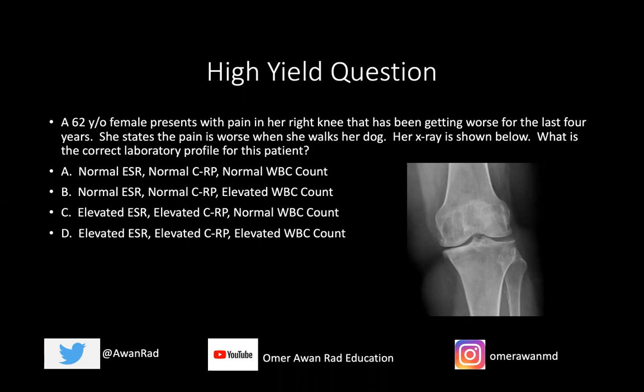Is it the ESR and CRP normal but the white count is elevated? Do we have elevated ESR and CRP but a normal white count? Or are all three lab values elevated in this patient? And it's based on this x-ray here of her right knee. I promise we'll come back to this question at the very end.